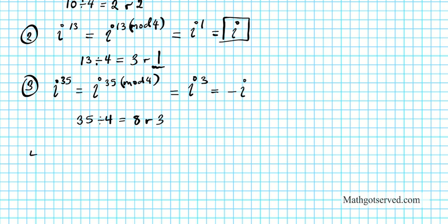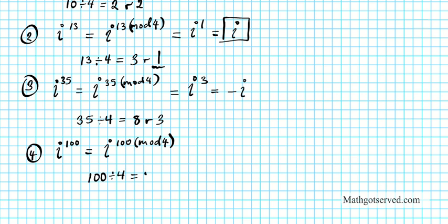One last example. Example 4: What is i to the 100th power? Using the formula, we need 100 modulo 4. What is the remainder after 100 is divided by 4? 100 divided by 4 is 25, remainder 0. So 100 modulo 4 is 0, meaning i to the 100th equals i to the 0. And i to the 0 equals 1. So there goes your answer.